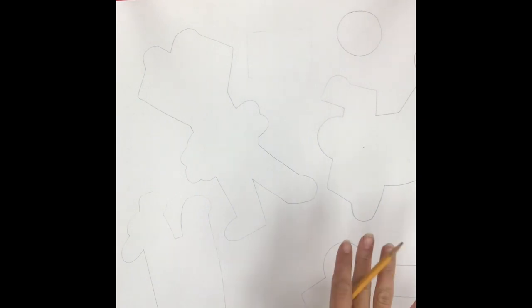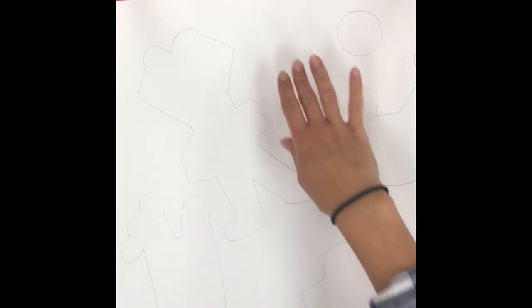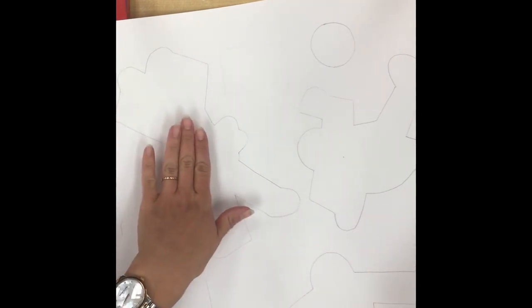Once you have traced all four figures, we're going to start filling in the space around our figures with different symbols and lines. This is a really great chance for you to add more symbols about yourself that you couldn't figure out how to do with a person figure.